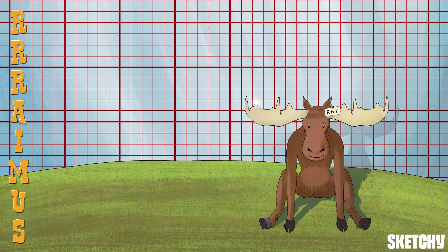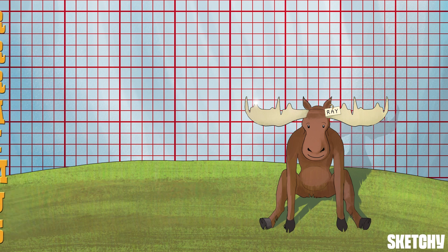An EKG records waves of electricity in the form of depolarization and repolarization as they move through the heart. We use multiple leads so we can view these waves from different angles. When electricity moves toward a lead, you'll see an upward deflection in the tracing; when it moves away from the lead, you'll see a downward deflection.